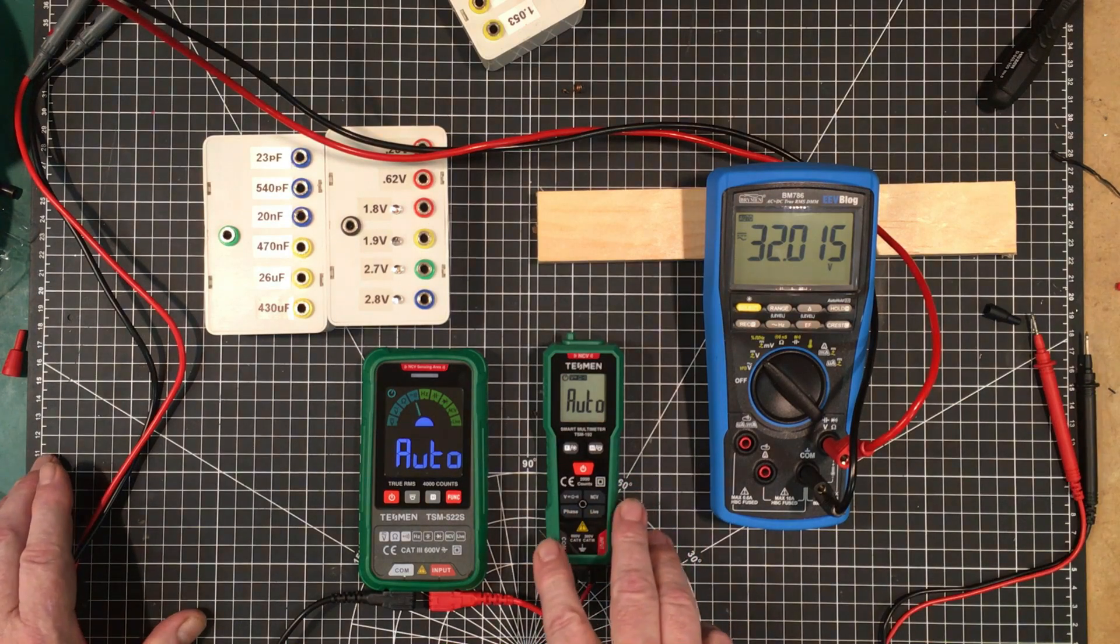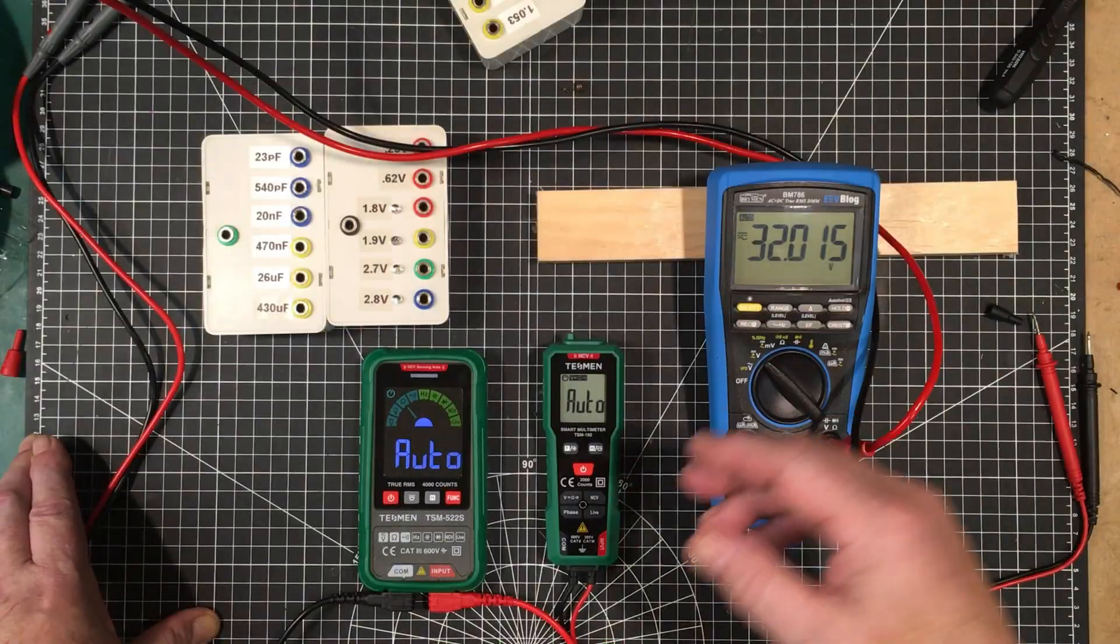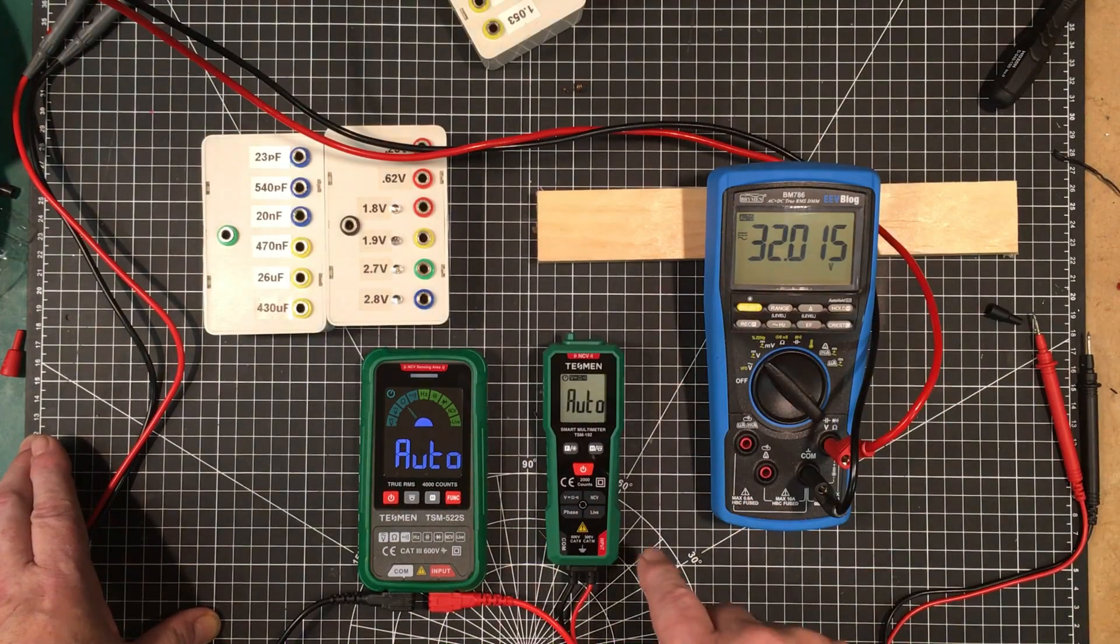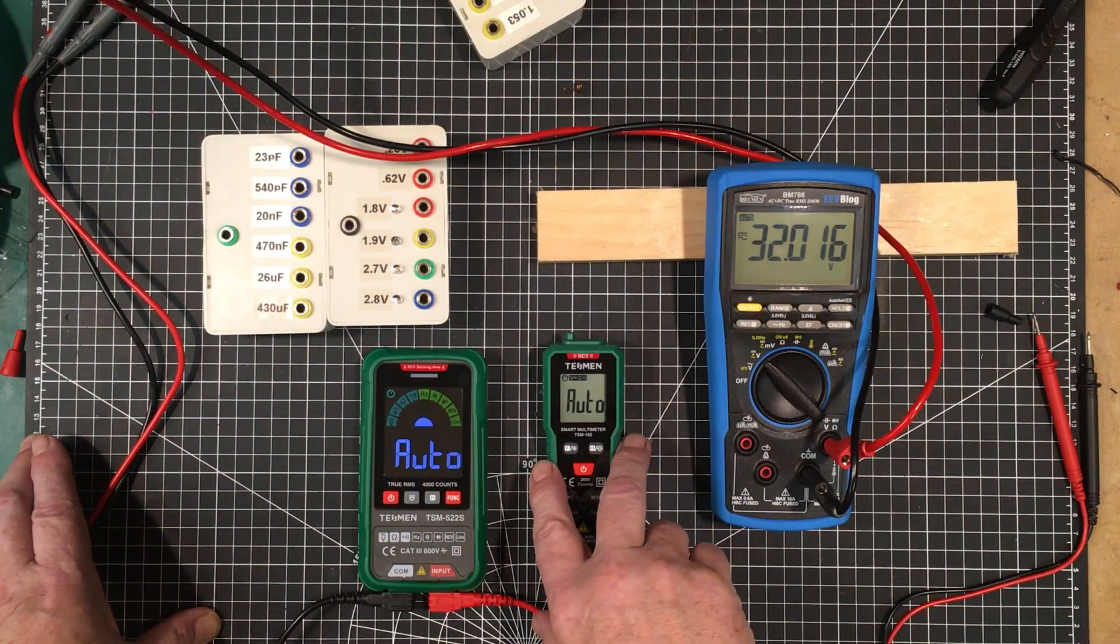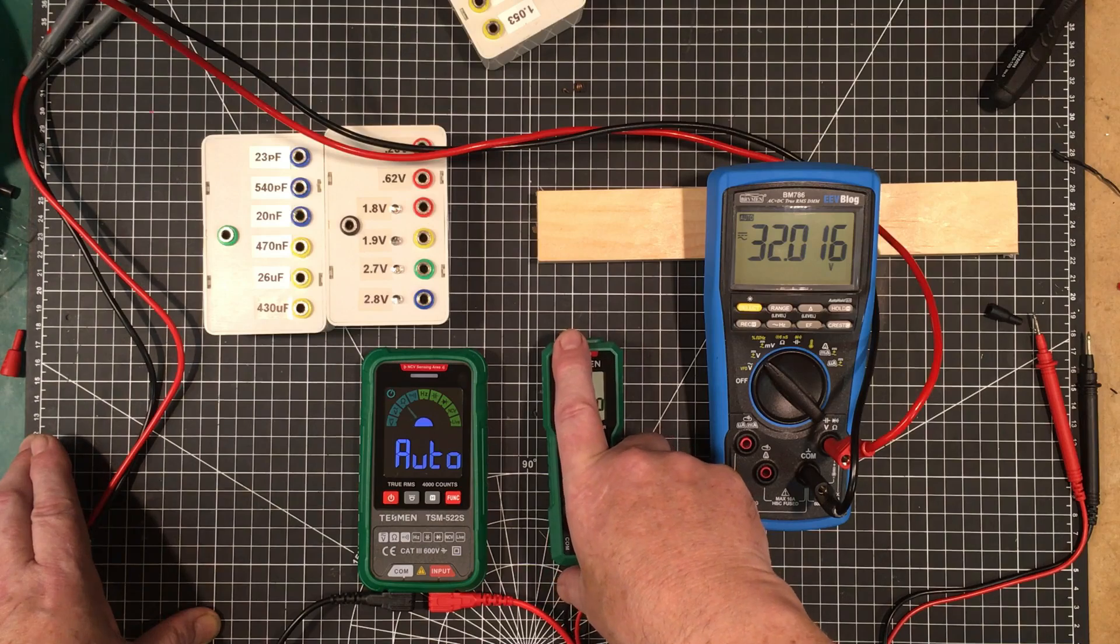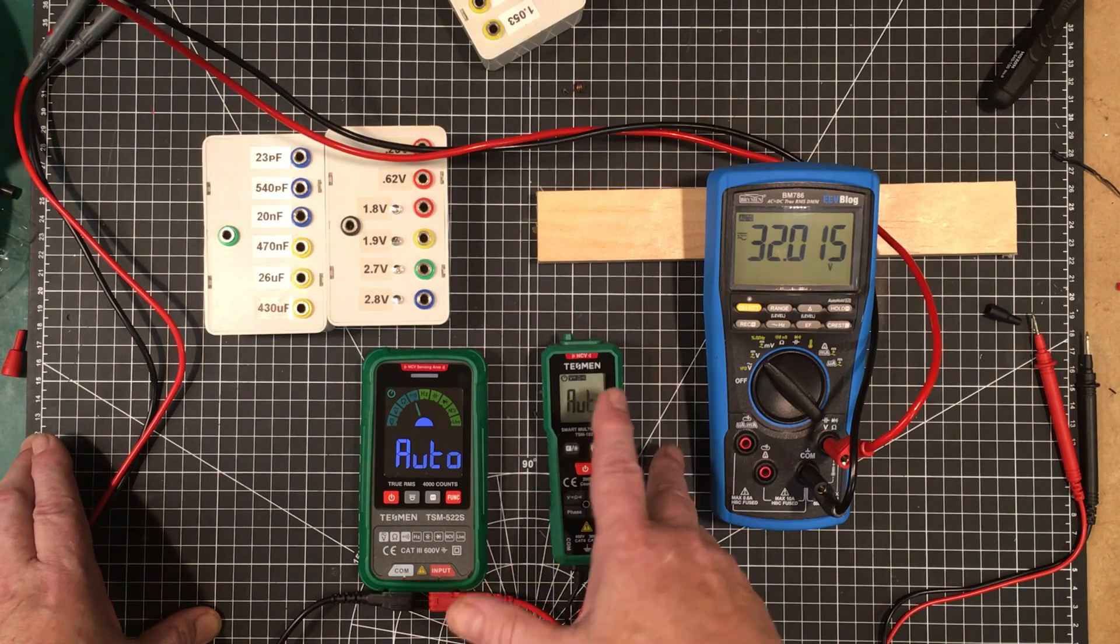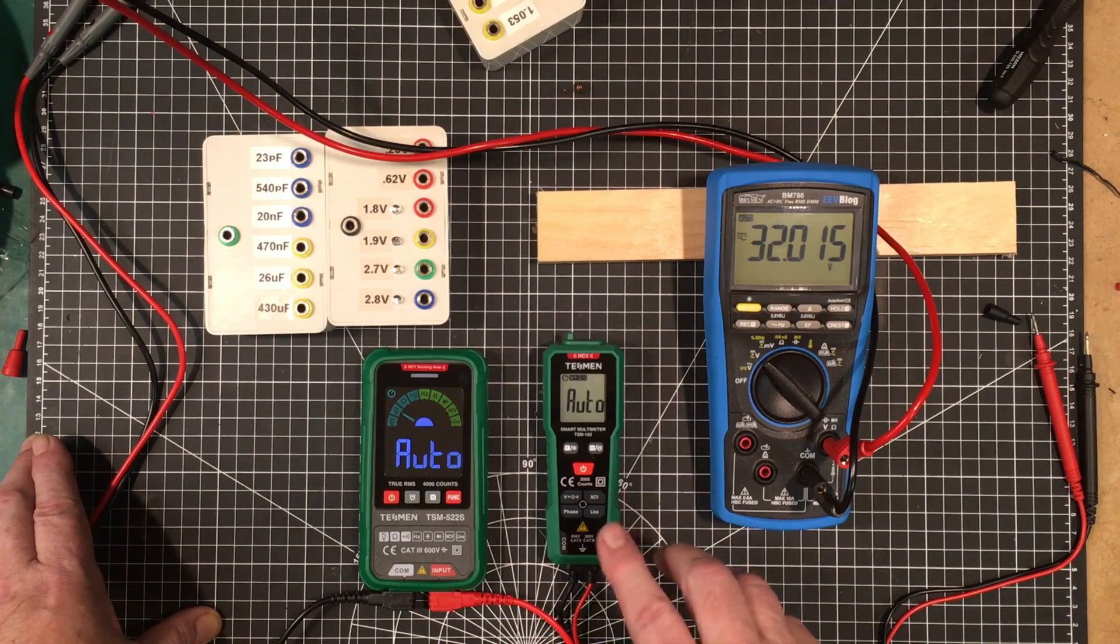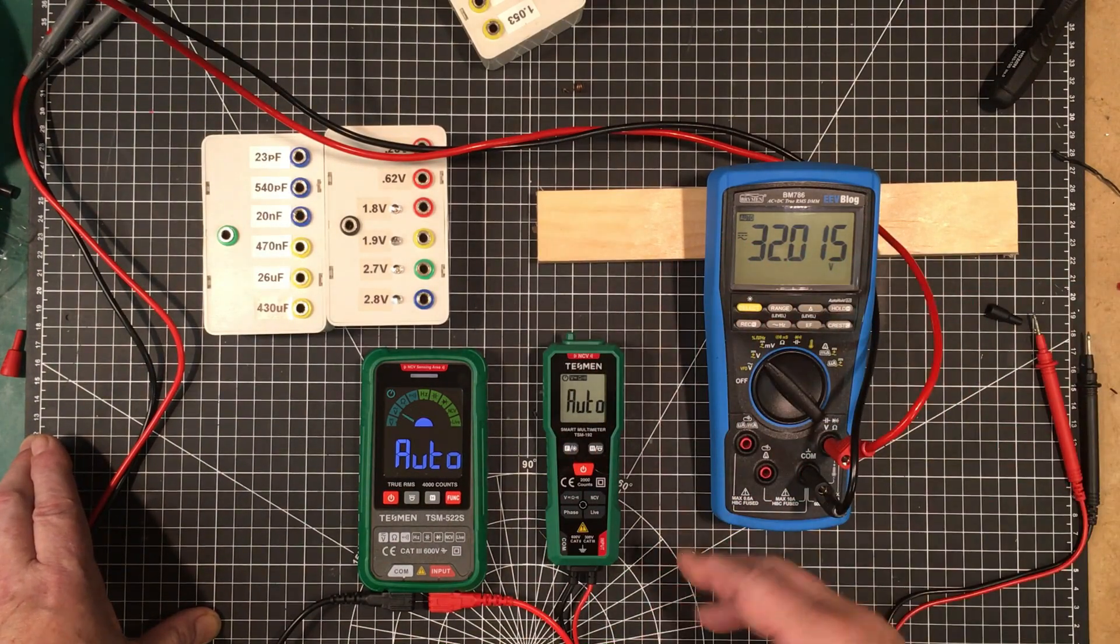This one has a really unique ability to test phase. If you have a three-phase supply, you want to know what direction it's rotating in. You can use this meter here to check that, and it uses the non-contact voltage to do that. Unfortunately, I can't demonstrate it to you. I don't know if the average handyman would be really interested in that, but I mean, they threw it in there. They could, and they did.